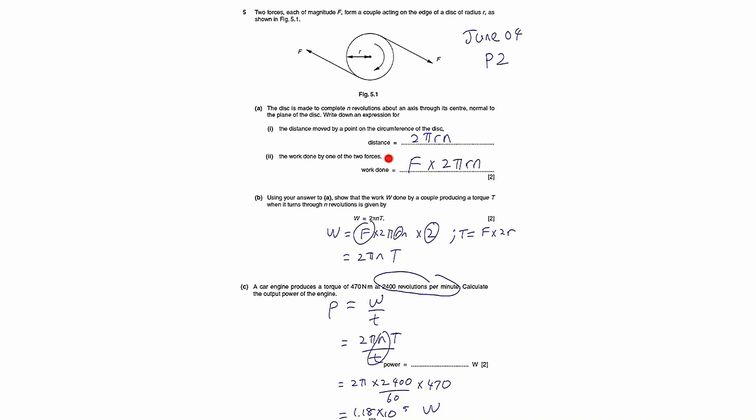So basically, you can just take the work done by one of the two forces and multiply by 2. That would be the work done by the couple, which are two forces. But they want you to convert from this formula to here.